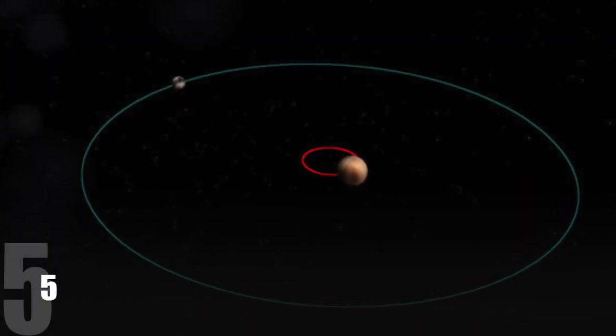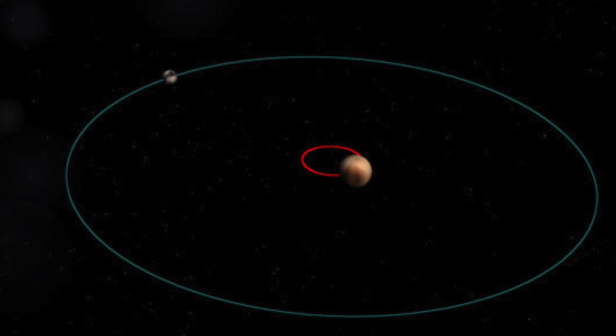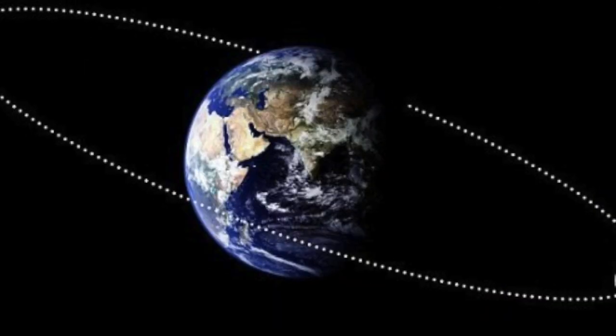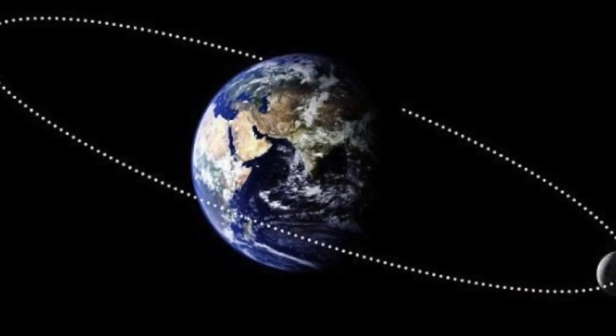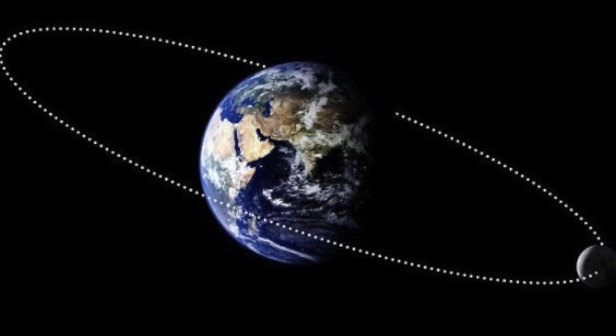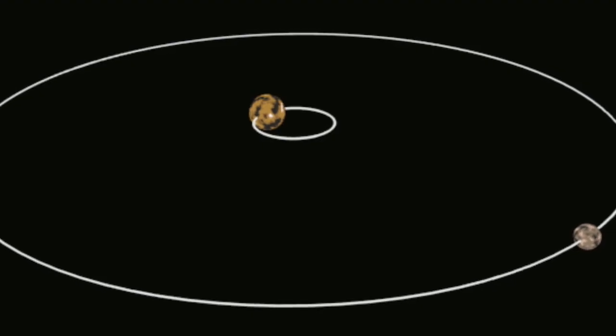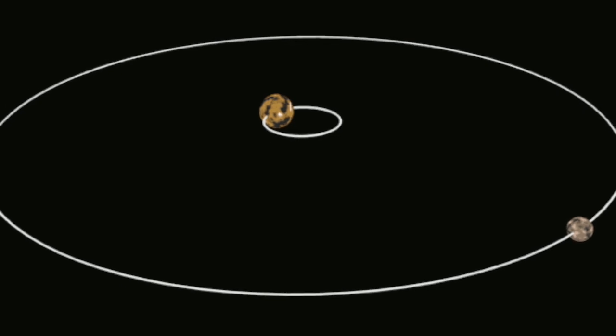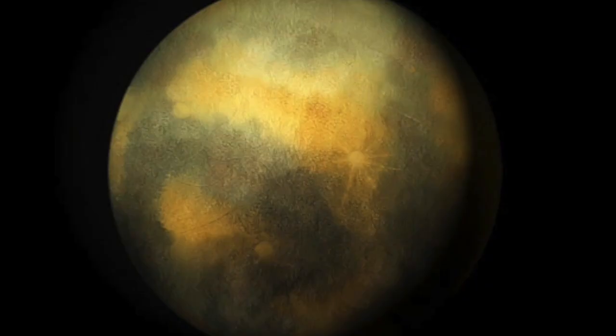You'd think that Charon orbits Pluto, but in reality, Pluto and Charon orbit a common point in space. In the case of the Earth and the moon, we actually orbit a common point, but that point exists inside the Earth. In the case of Pluto and Charon, however, that common point is somewhere above the surface of Pluto. 4.